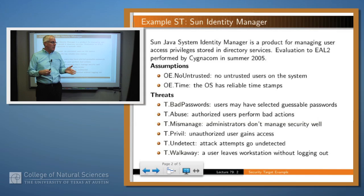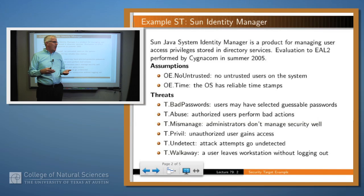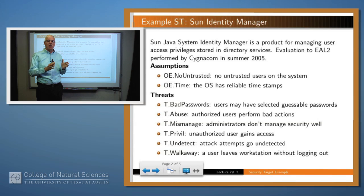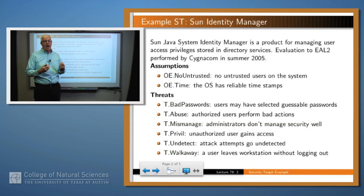The set of threats being countered — for example, a user might have specified a guessable password, which is a problem on a lot of systems; that authorized users might perform bad actions; that the system might be mismanaged; and so on. Sun enumerated the set of threats they thought this system might have to counter, and then had to say how those threats were actually countered.